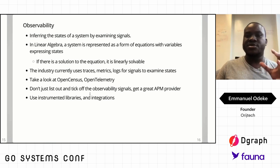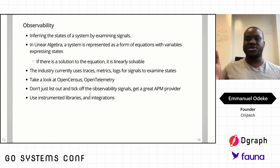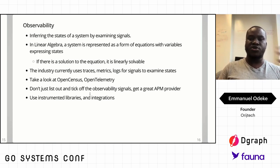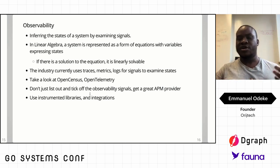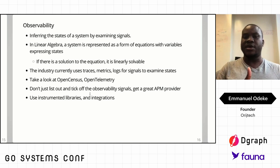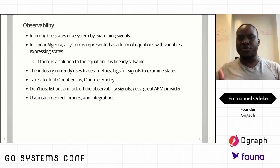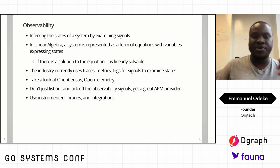The idea is you infer the states of a system by examining specific signals. If you think about this in linear algebra, you model a system as a form of equations with variables expressing the states — if it's linearly solvable, you know what's going on. To make it relatable: you go to a doctor, the first thing they do is ask for tests — blood pressure, hearing tests, weight, blood tests. They collect critical signals, check heart rhythms, compile them, correlate the problems you've raised, make a prognosis, do further tests, then give you a diagnosis. That's pretty much how observability helps.